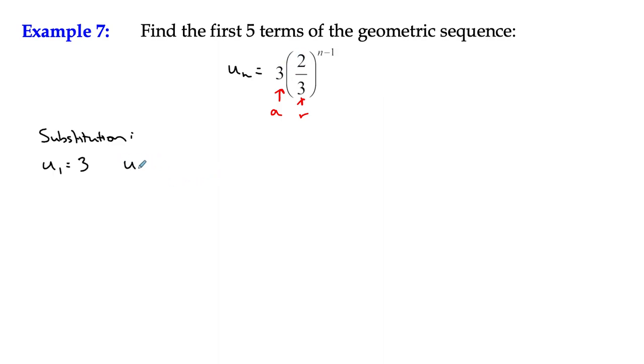If I want to find u2, well, n is two. So I could say it's three multiplied by two thirds to the power of n minus one, which will be one. So it's three multiplied by two thirds, which is two.